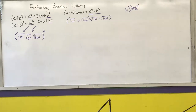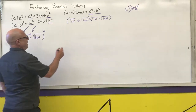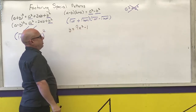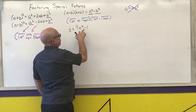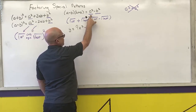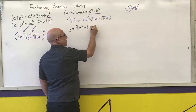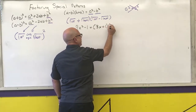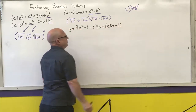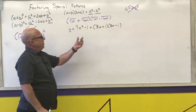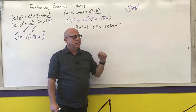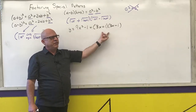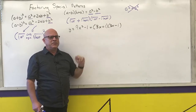The first example is 9x squared minus 1. I want to factor this. 9 is a perfect square, and x squared is a perfect square. So I take the square root of the first plus the square root of the last, times the square root of the first minus the square root of the last. So I have 3x plus 1, times 3x minus 1. Once you have the factors, you can find your x-intercepts by solving these.